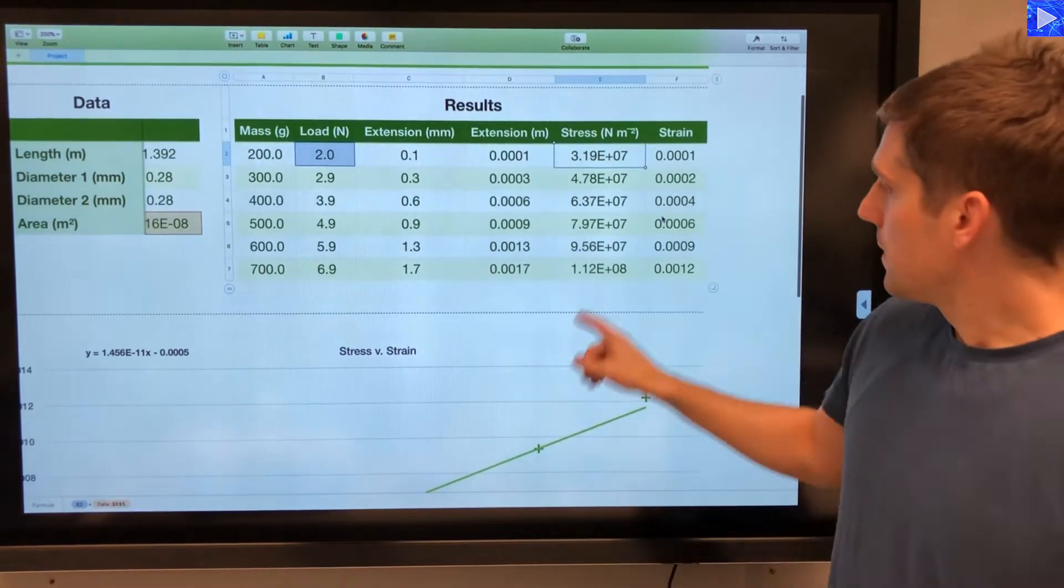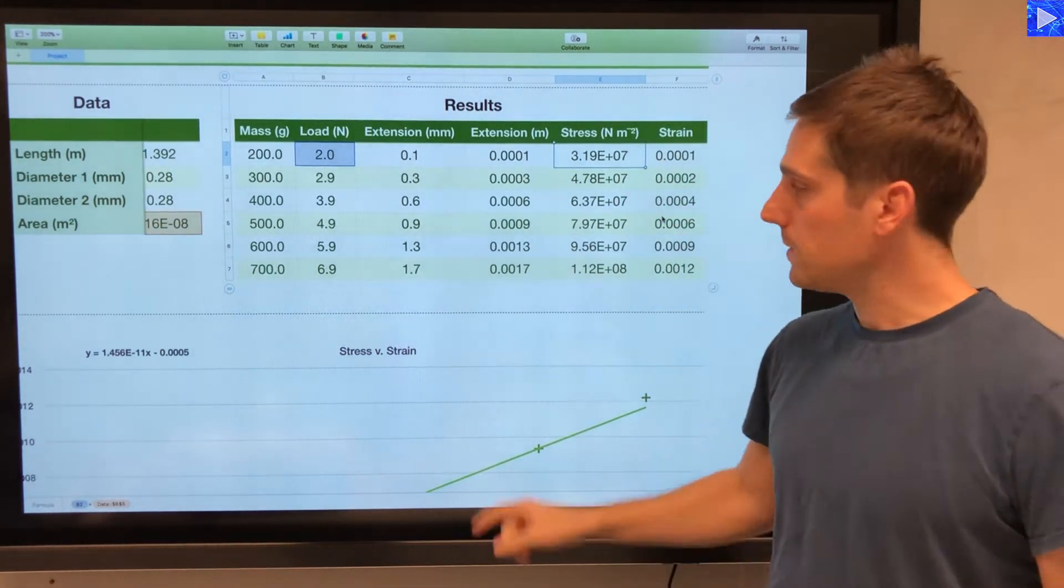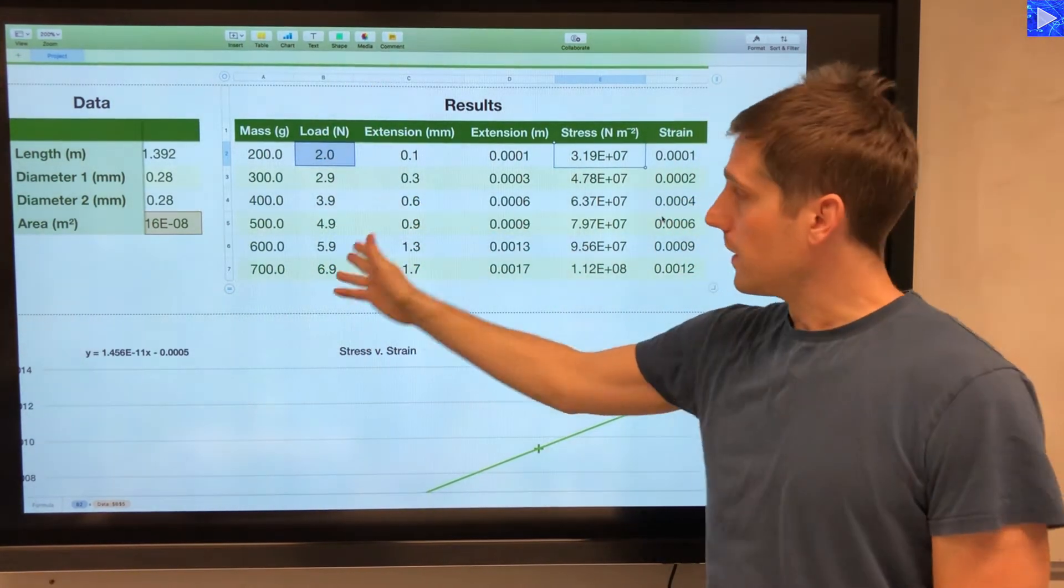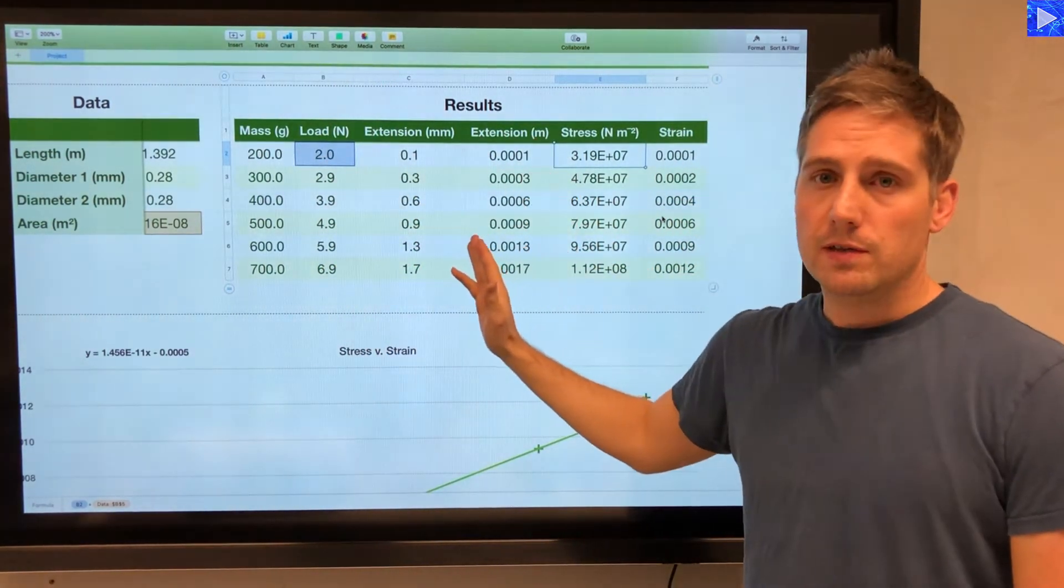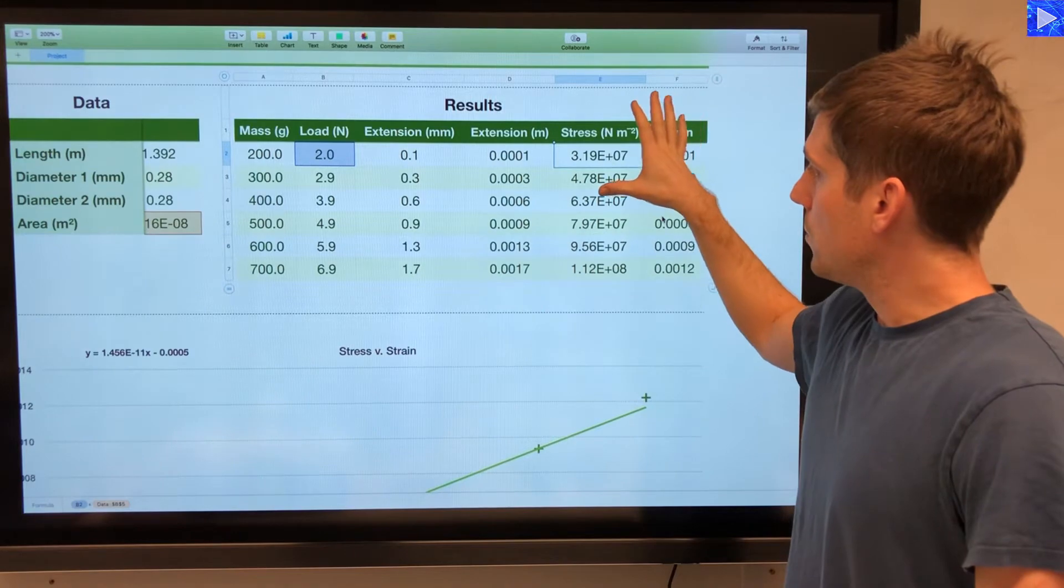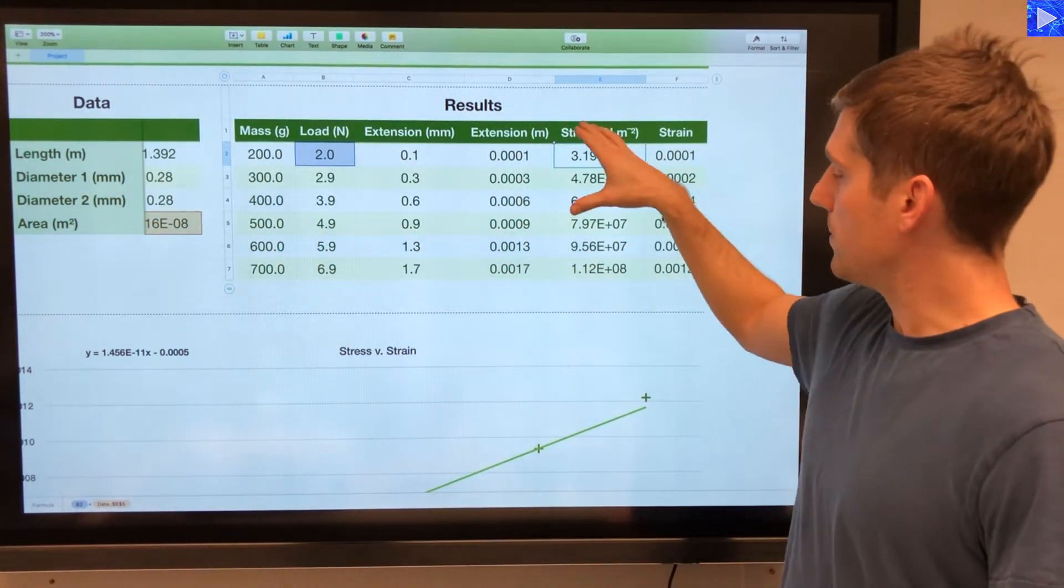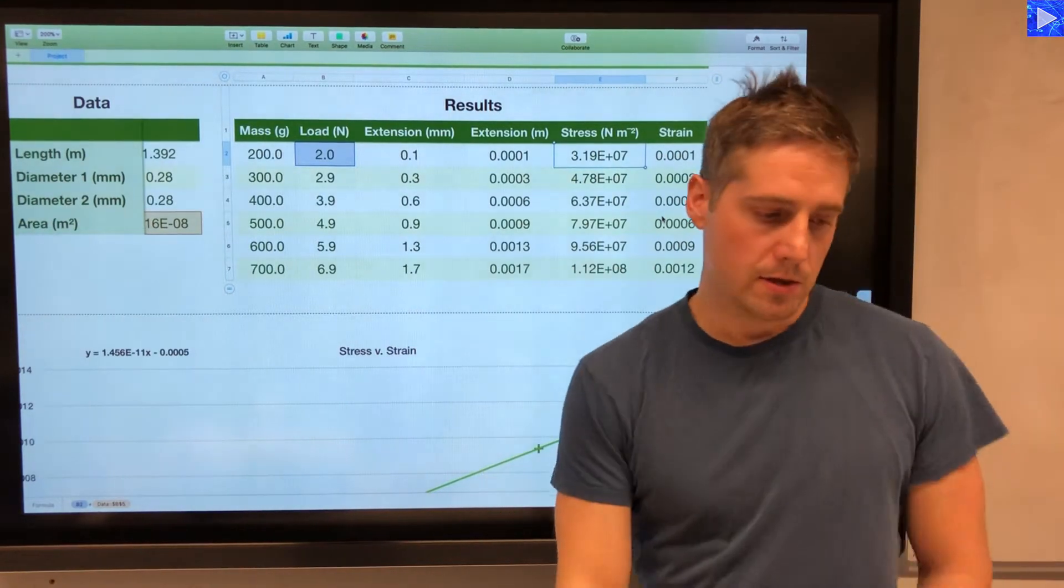So the stress will come out in newtons per square meter. I've already converted, well, the load is in newtons anyway, and the extension has been converted into meters. And the area, of course, was in square meters, so this will come out in newtons per square meter.